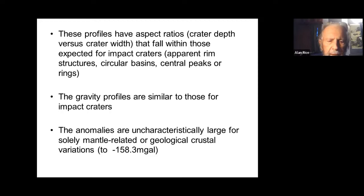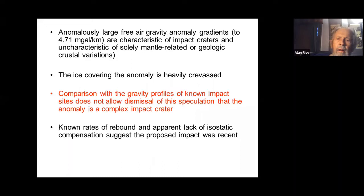The gravity profiles are similar to those of impact failures. The anomalies are characteristic—large, hardly what you expect for solely geologically-related crustal variations. The anomaly gradients, crossing over into the impact area, are anomalously large, which is again characteristic of impact craters. The ice covering the anomaly now is simply pervast, meaning it happened relatively recently. Comparison with known impact sites does not allow dismissal that this might be a crater.